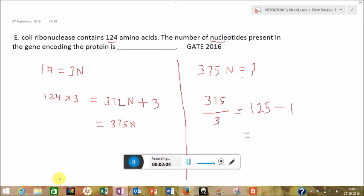Just divide 375 by 3. You'll get 125, and subtract one from this because there is one stop codon that will not code for any amino acid. So we'll get 124.